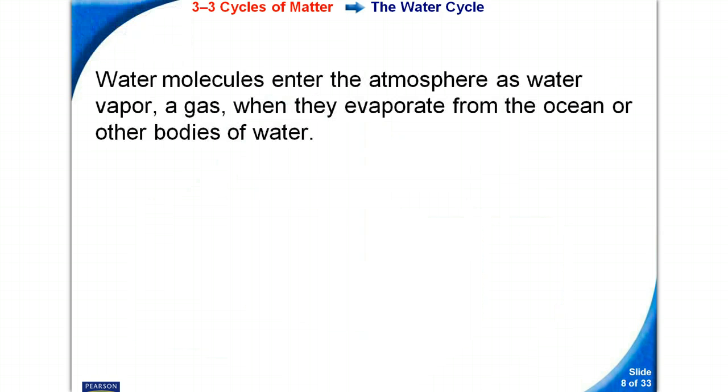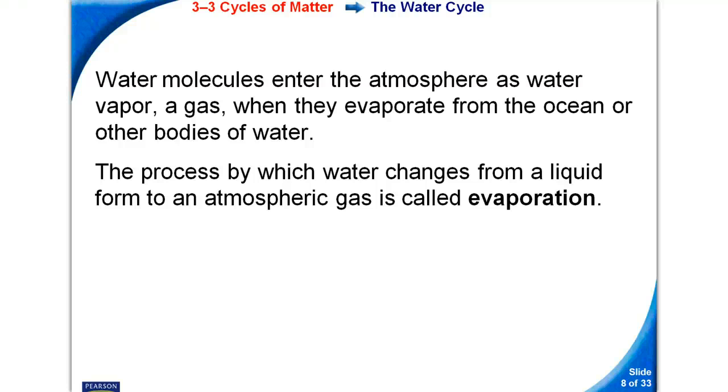Water molecules enter into the atmosphere as water vapor gas when they evaporate from the ocean or other bodies of water. The process by which water changes from a liquid form to an atmospheric gas is called evaporation.